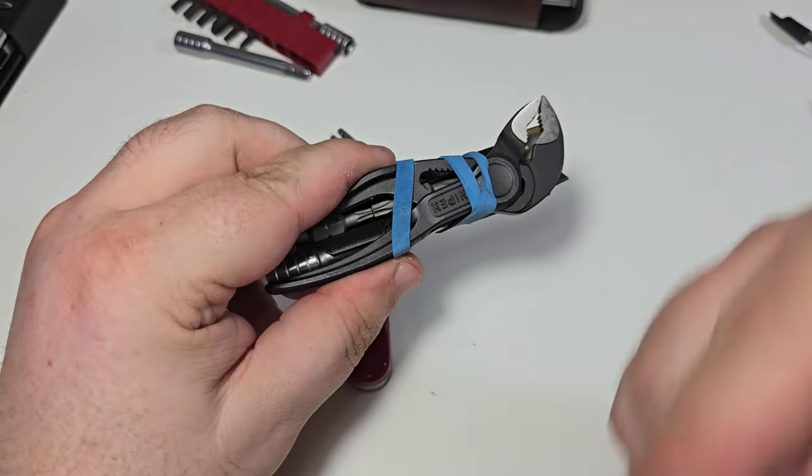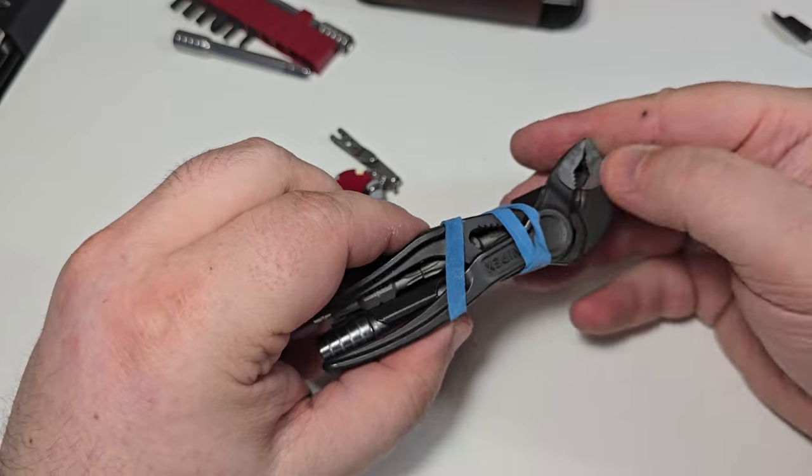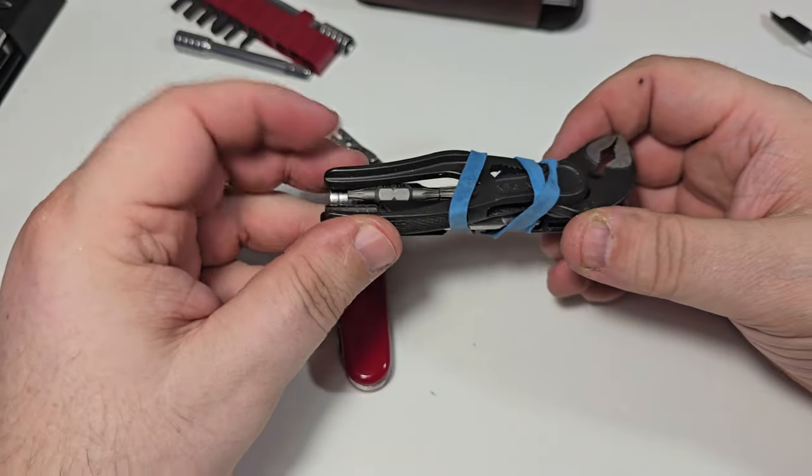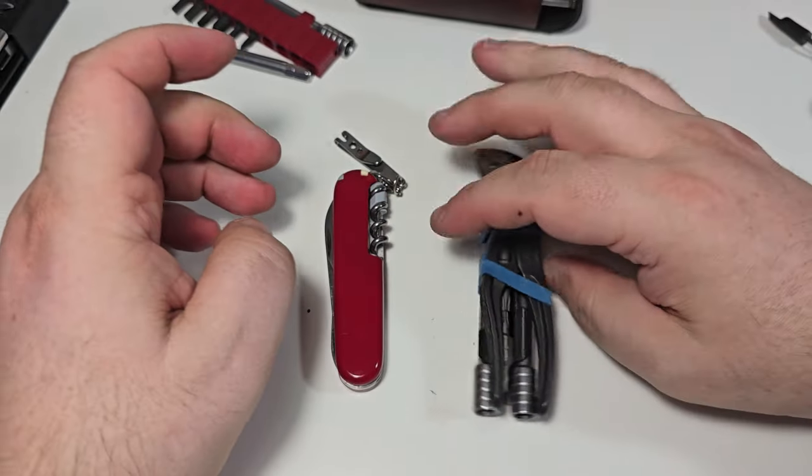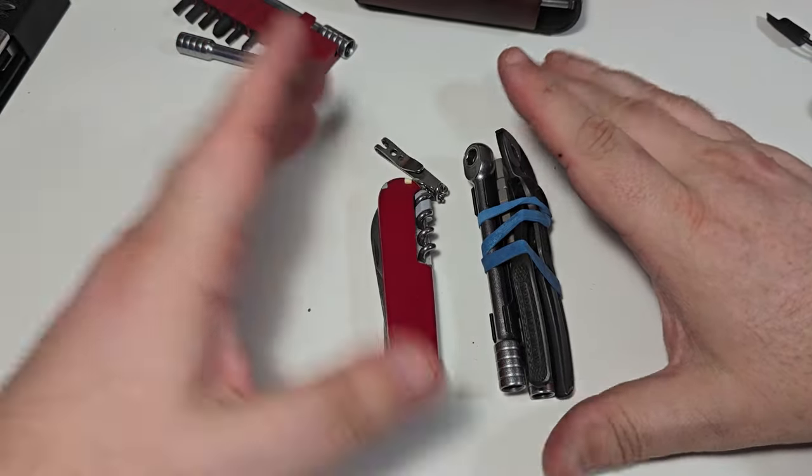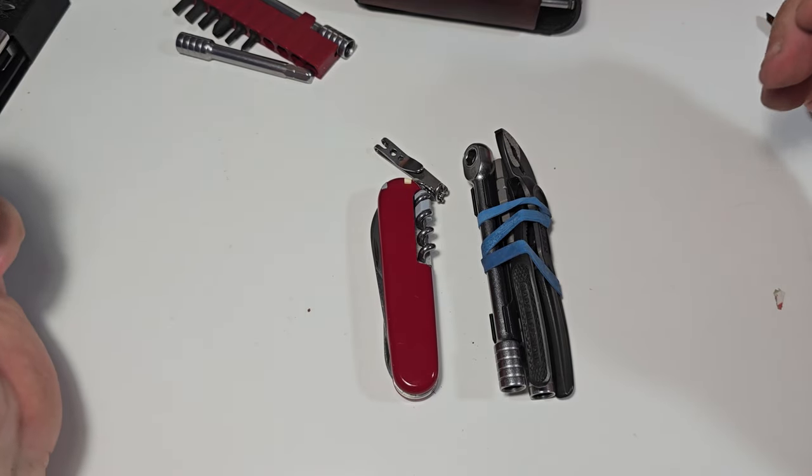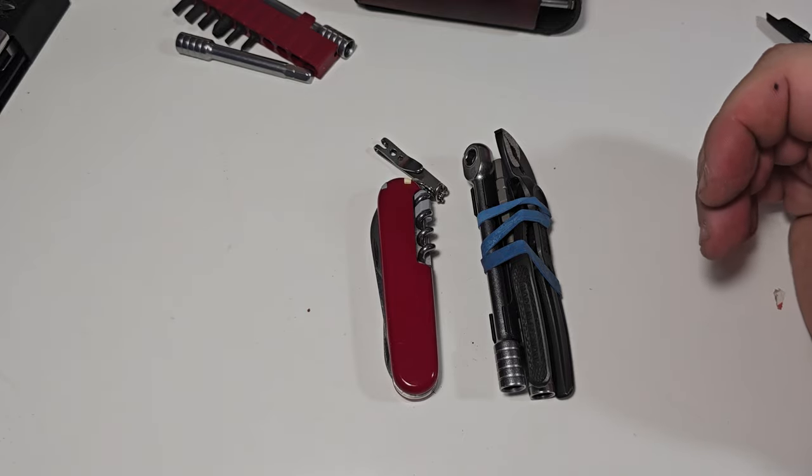If you close the Knipex Cobra, as I showed in a previous video, you don't lift this too high, you leave it a little bit low so this will be much thinner on this side. Now here you go, you have this, and this is compared with the Victorinox Compact, the 91 millimeters.